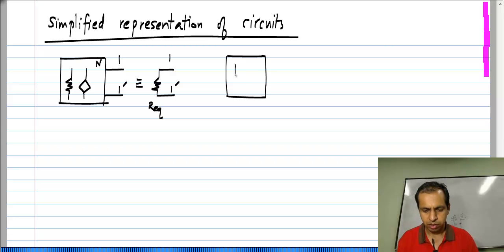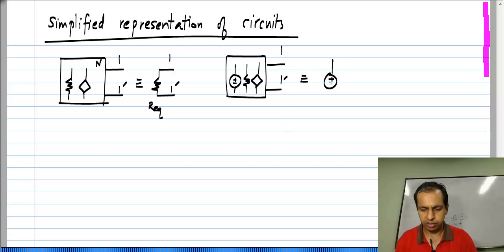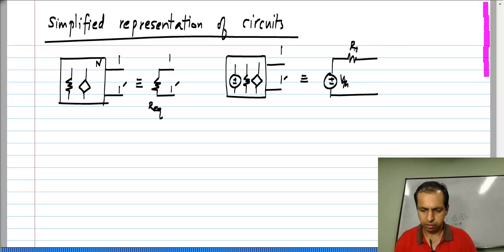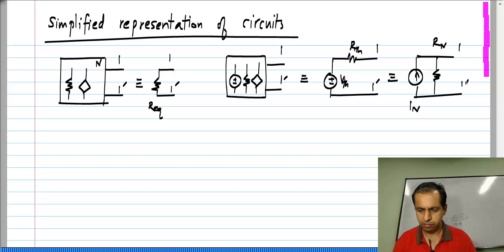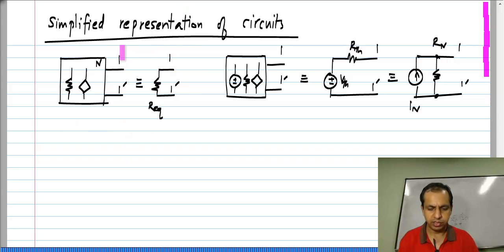Similarly, if we have independent sources, resistors, and control sources, it is equivalent to having a voltage source in series with a resistance — which is also equivalent to a current source in parallel with a resistance. By the way, instead of specifying the equivalent resistance, you could also specify the equivalent conductance.